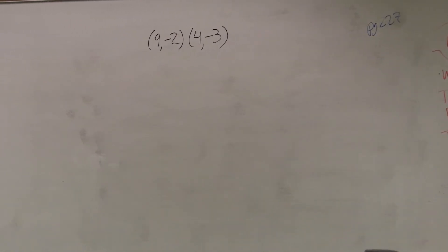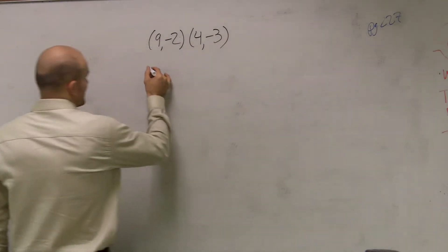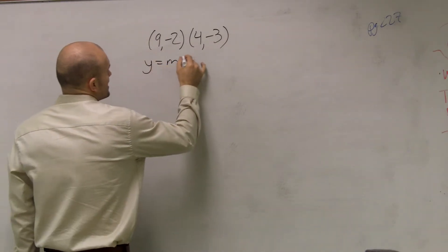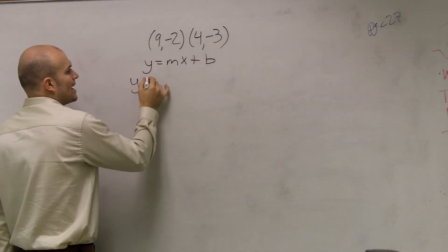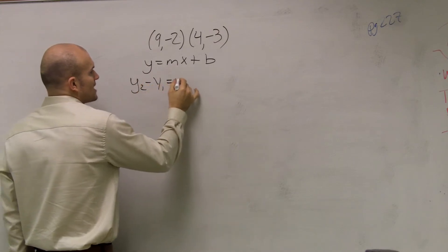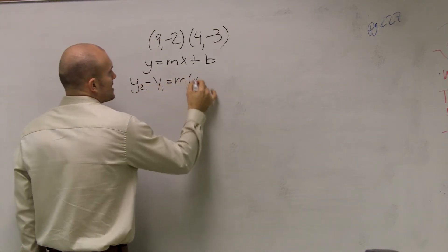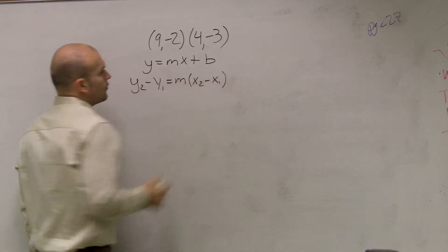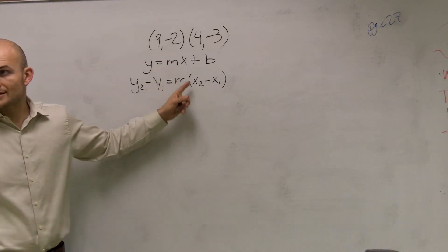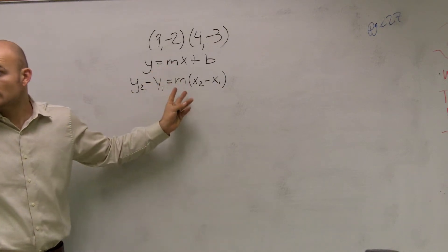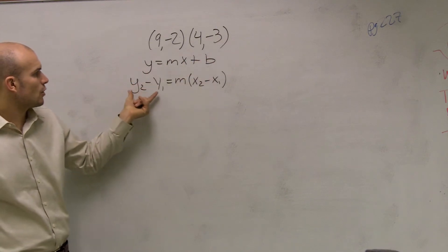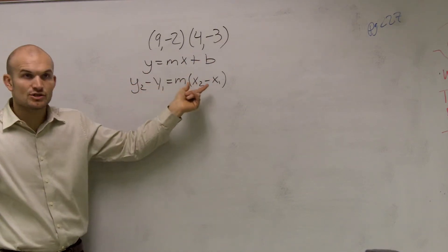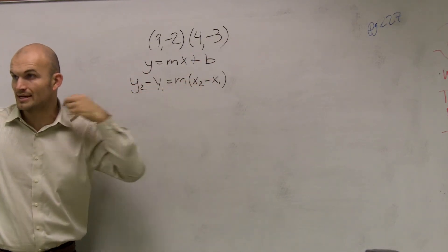So if I'm giving you guys two points. Previously, we worked on the equation of a line y equals mx plus b. And then I most recently told you y2 minus y1 equals m times x2 minus x1, where m represents our slope for both of those, b represents our y-intercept, and y1, y2, x1, x2 represent points on a graph.